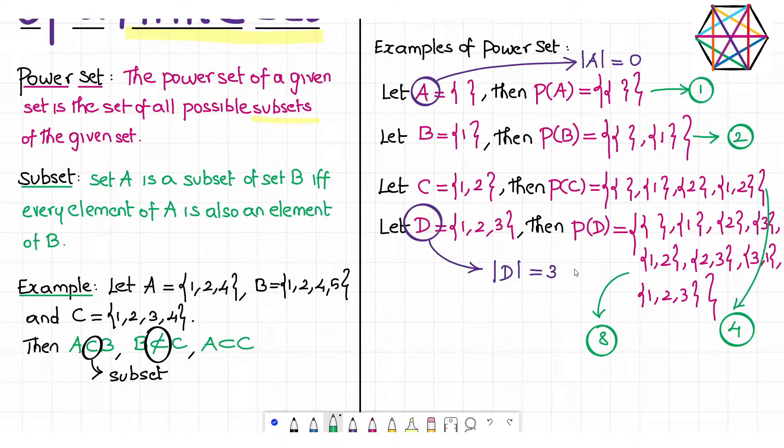In general, we can say that if a set has n elements, then its power set will have 2 power n elements. Is this claim true? And what is the proof of it? Let's find out.